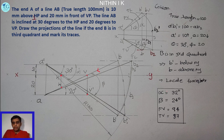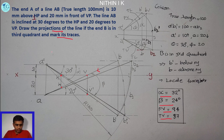The final answers are: alpha equals 32 degrees, beta equals 24 degrees, front view length equals 94mm, top view length equals 87mm. However, the question asks to draw the projection and locate the traces, so these are the values we verify. The draft answer involves locating the points and drawing the true length of the line.